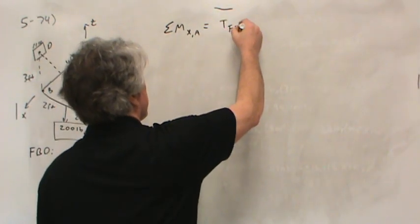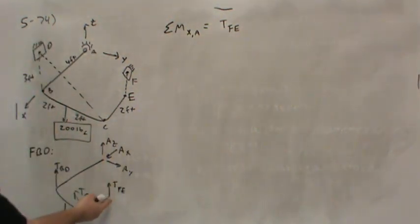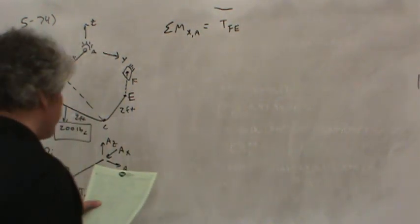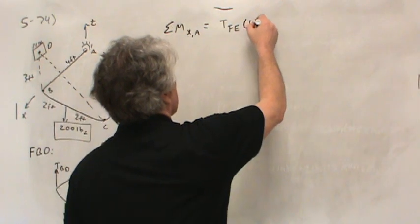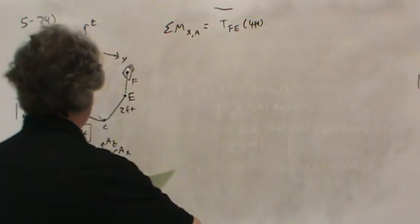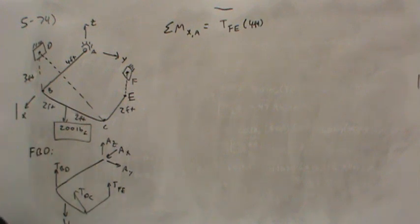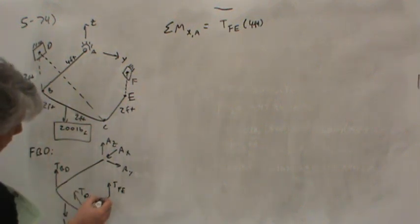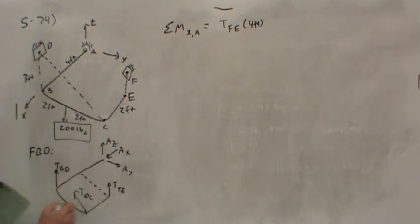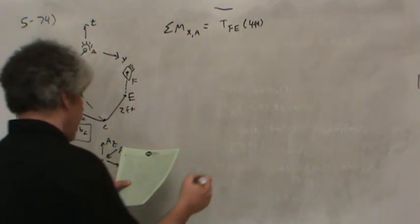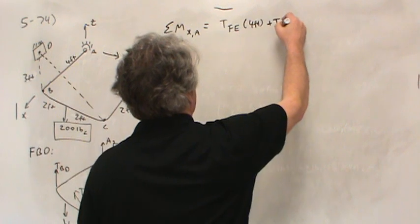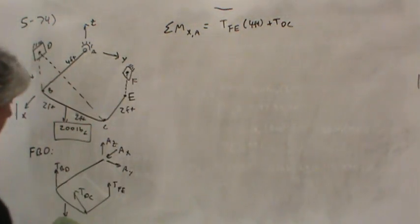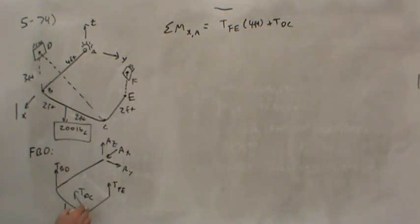So let's start off with FE, we'll just work our way around. So TFE, well that's pulling straight up, with a moment arm of four feet. And notice that it causes a moment in the positive X direction, right, because the moment arm right there, four feet, well TFE is tending to cause a rotation this way about the X axis, and that's positive. In the same way, DC will cause a positive moment. But we can't use all of DC, because look, we just want the vertical piece of it.